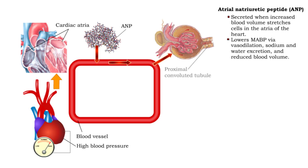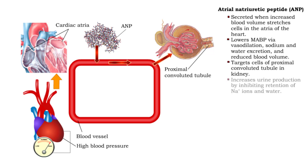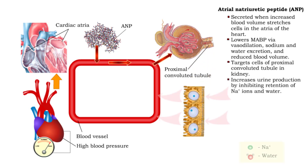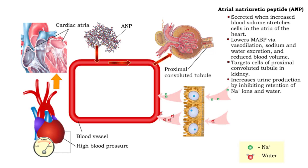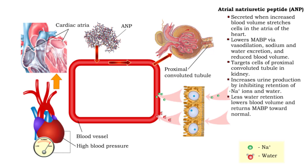ANP is secreted and targets cells in the kidneys. The hormone inhibits sodium and water retention. Blood volume lowers as more sodium and water is lost in urine, and blood pressure and blood sodium are lowered toward normal.